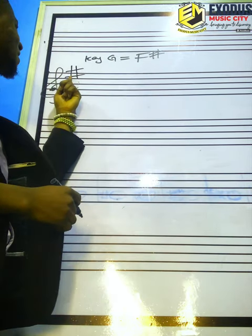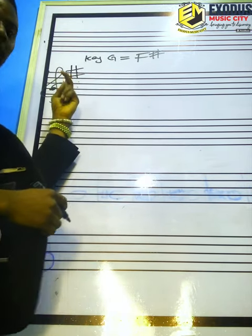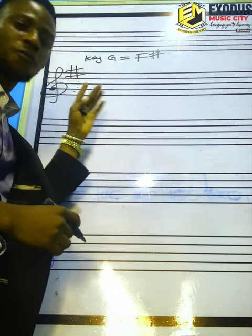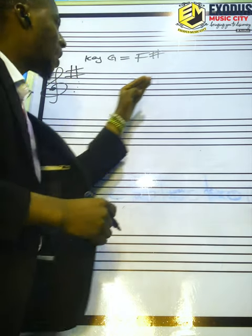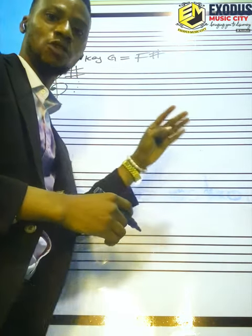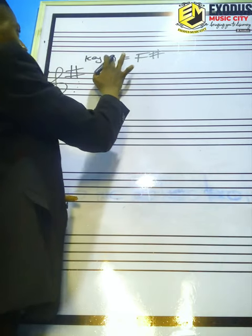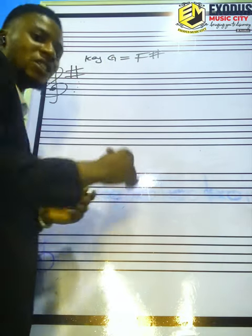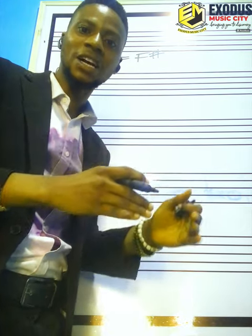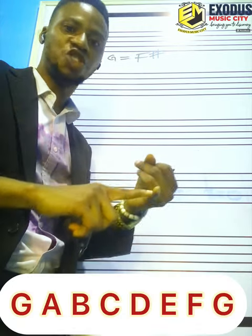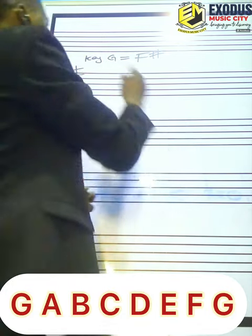After the key signature, then you fix the notes alphabetically. To construct the scale of G, you have to start from G and end on G. That is G, A, B, C, D, E, F, and G.